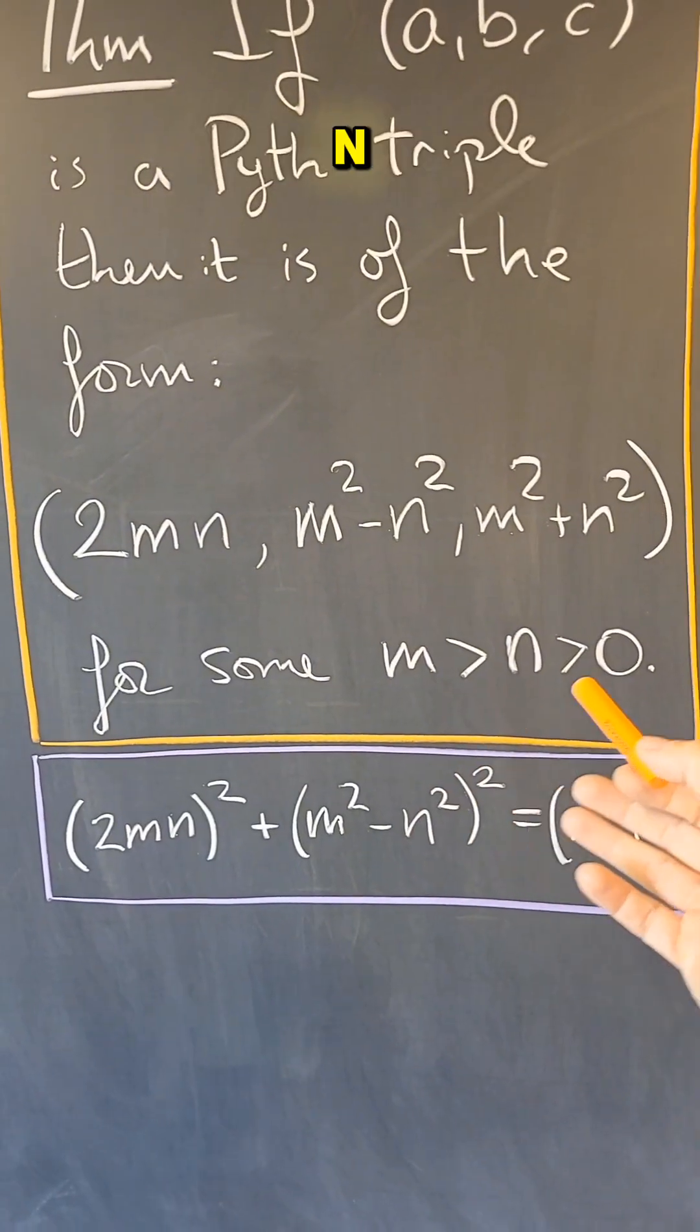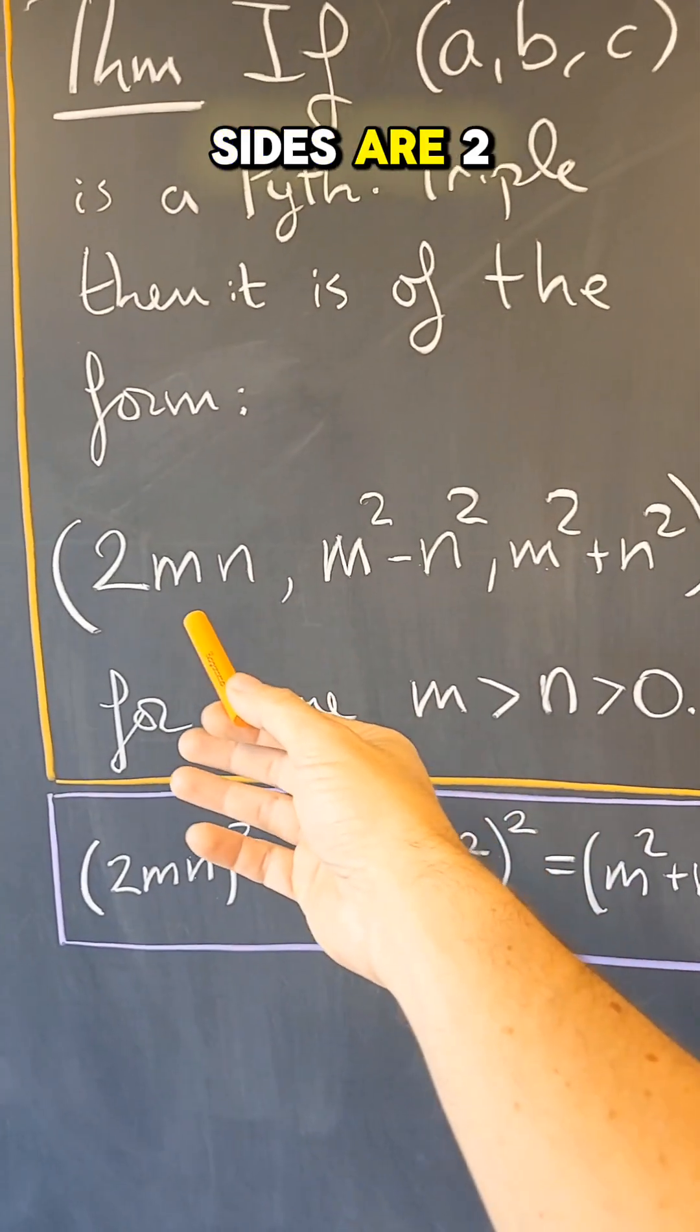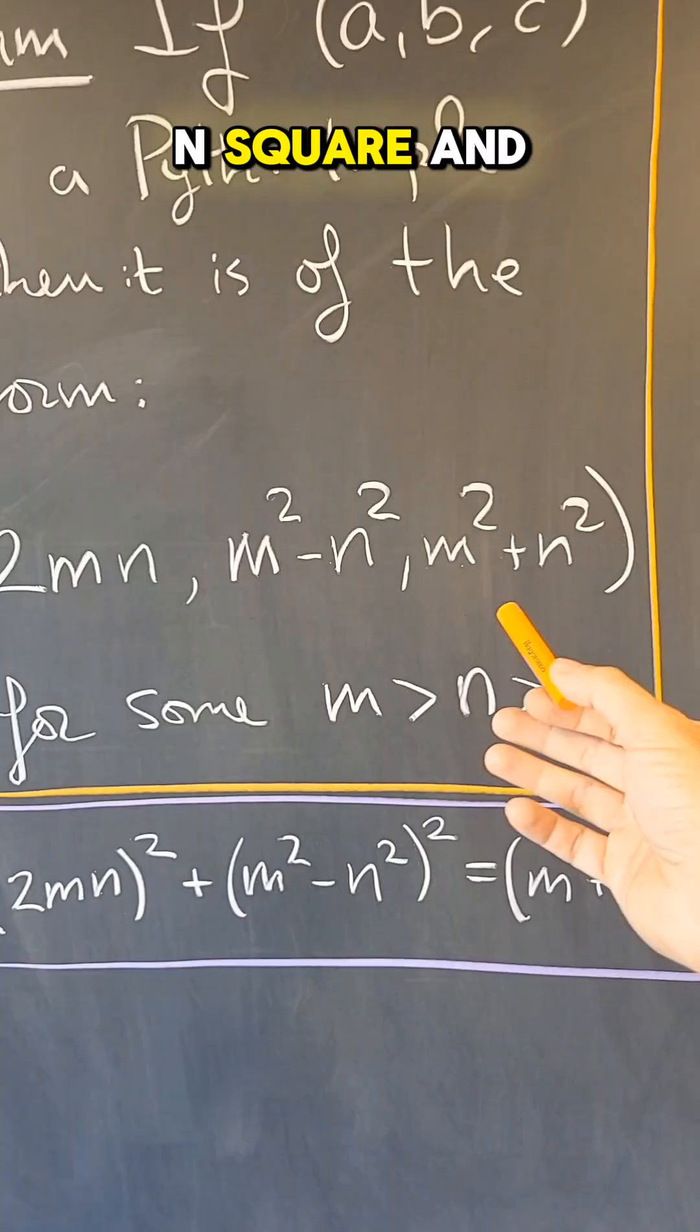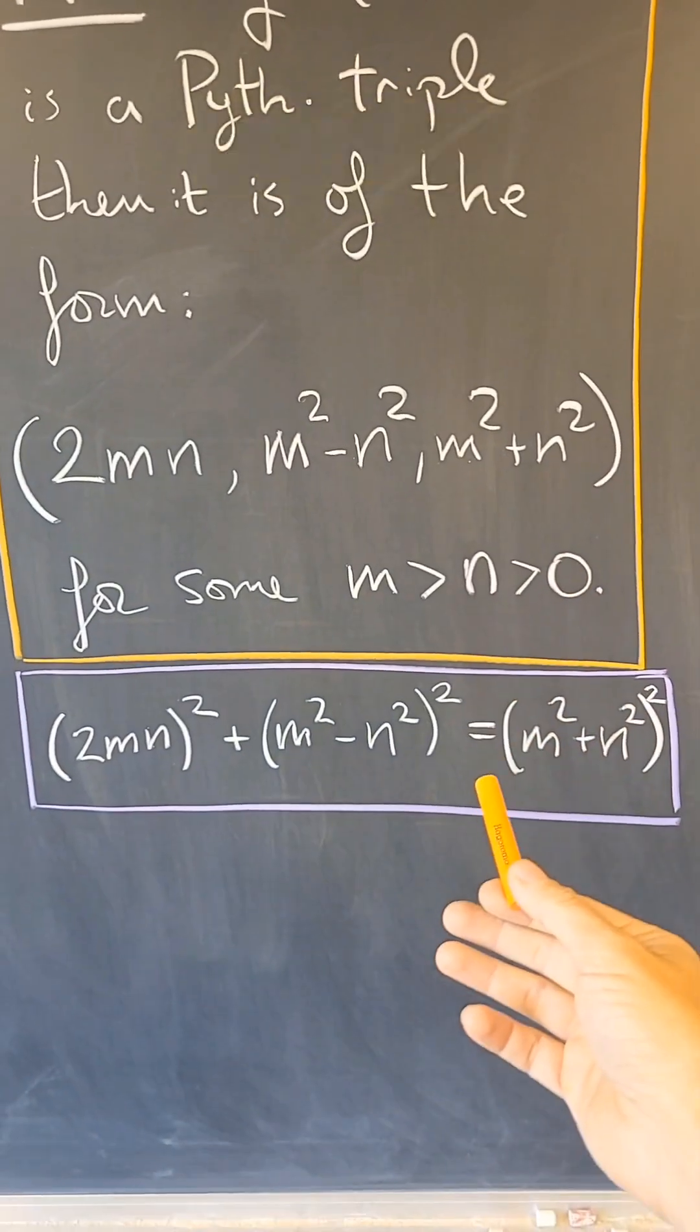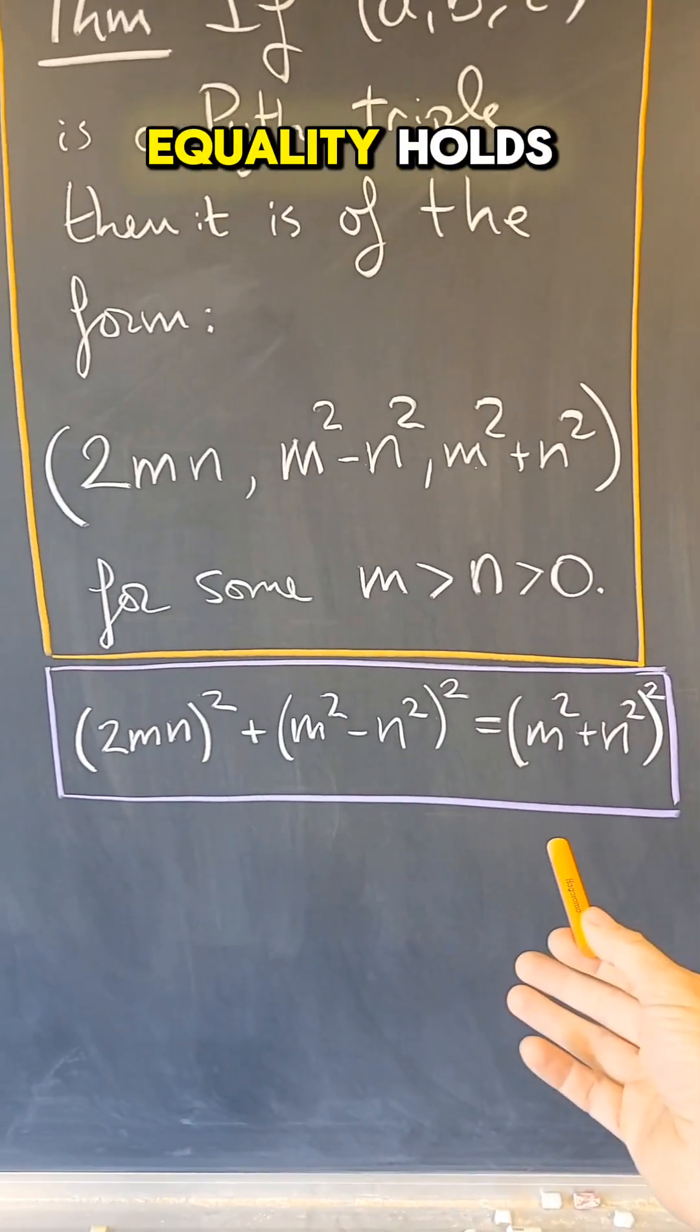There is some m bigger than n bigger than 0, such that the sides are 2mn, m squared minus n squared, and m squared plus n squared, because this beautiful equality holds.